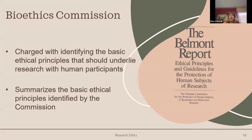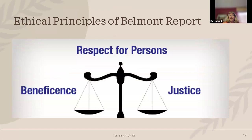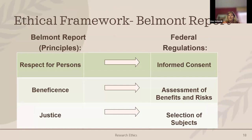The Belmont Report is about 100 pages and covers three different principles: beneficence, respect for persons, and justice. These three principles fit very nicely into human subject research. Respect for persons is where the informed consent process comes in. Beneficence means we're always looking at benefits and risks, and justice ensures equitable selection of subjects.